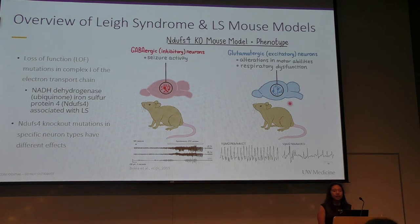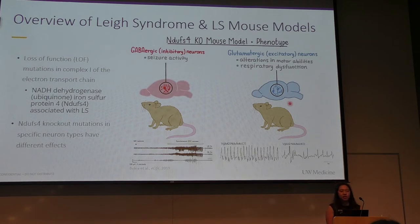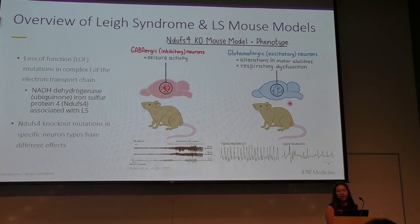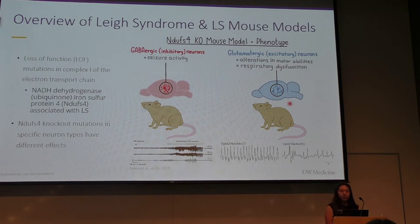In many cases, Leigh syndrome is associated with loss-of-function mutations in Complex I of the electron transport chain. One of these mutations occurs in NADH dehydrogenase ubiquinone iron-sulfur protein 4, or NDUFS4 for short, which is a gene that codes for a subunit of Complex I, and loss-of-function mutations in NDUFS4 have been associated with Leigh syndrome. To study Leigh syndrome, a mouse model with NDUFS4 knockouts can be created. However, NDUFS4 knockout mutations in specific neuron types will cause different effects in the mice, which together can model Leigh syndrome.